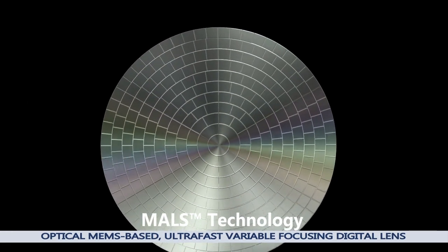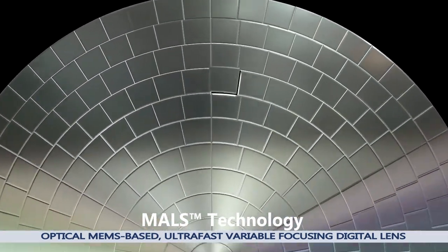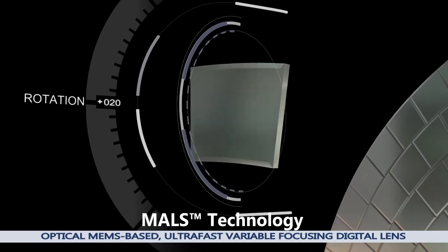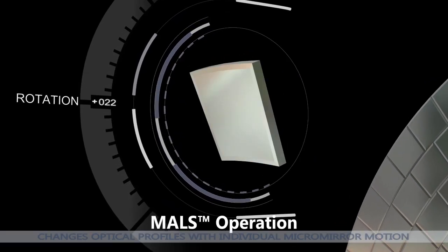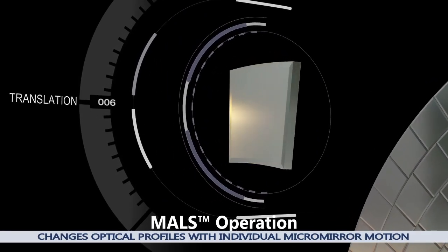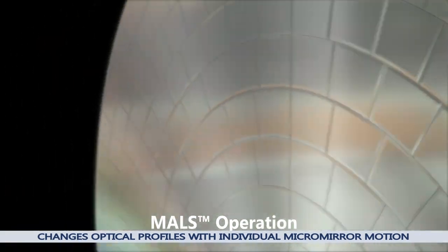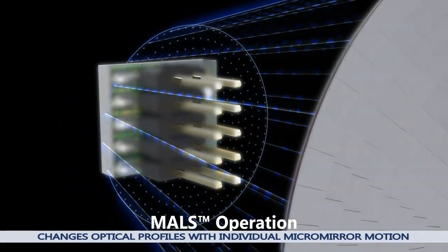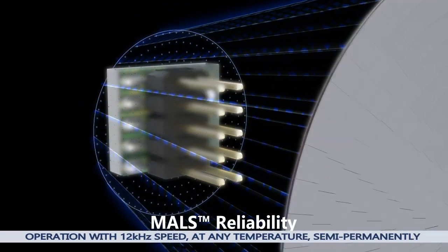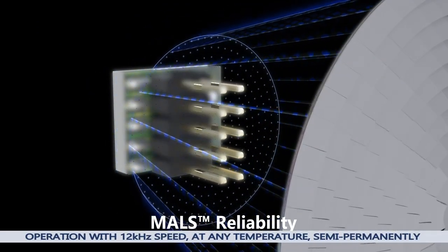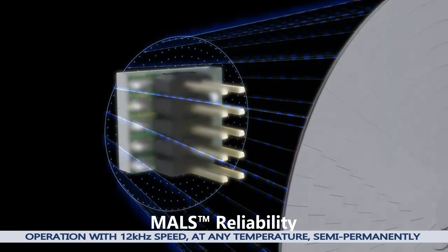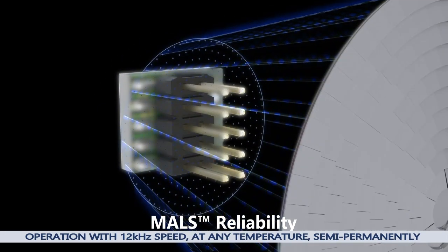MALS is an optical MEMS-based ultra-fast variable focusing lens that implements curvature changes in the lens with the motion of individual micromirrors. MALS moves and focuses at the speed of 12 kHz without z-axis mechanical movement. It is a semi-permanent digital lens technology that operates at any temperature and has no life cycle limit.